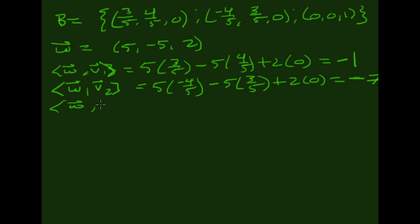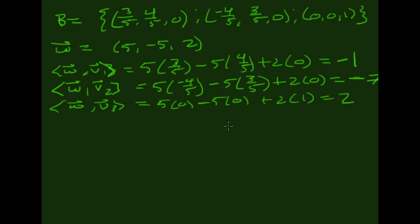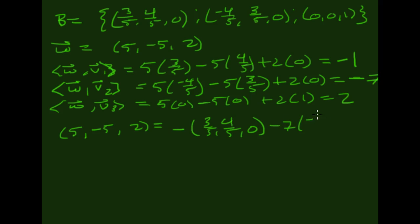And if I take ⟨W, V3⟩, I get 5 times 0 minus 5 times 0 plus 2 times 1, which is 2. So what we're saying here is that I can write (5, −5, 2) as the coefficients of these vectors: negative 1 times (3/5, 4/5, 0), minus 7 times (−4/5, 3/5, 0), plus 2 times (0, 0, 1). And you can check that that works.